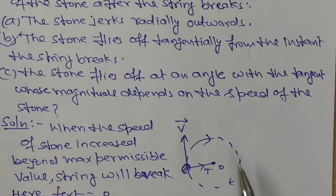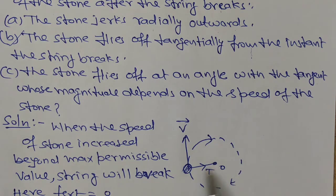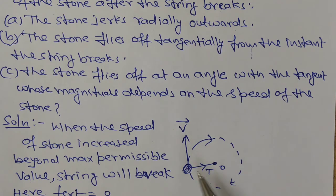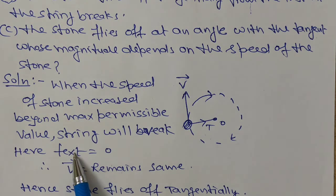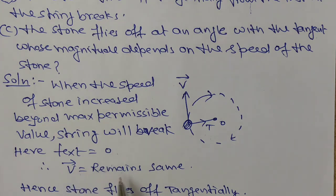This is our horizontal plane. We have revolved the stone. At any instant, the speed is tangential. The question says that if the string suddenly breaks, no external force acts on the system. When the external force is zero, the velocity of the body remains constant — both in magnitude and direction.